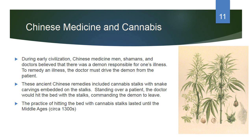During early civilization, Chinese medicine men — shamans, as they were called in northern parts such as Siberia — believed that a demon was responsible for illness. To remedy illness, the doctor had to drive the demon from the patient. Ancient Chinese remedies included cannabis stalks with snake carvings embedded in them. The doctor would stand over the patient and hit the bed with the stalks, commanding the demon to leave. Interestingly, this practice of hitting the bed with cannabis stalks lasted until the Middle Ages, around the 1300s.